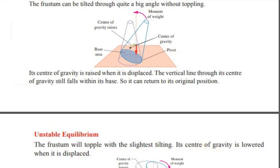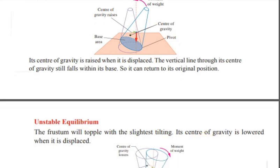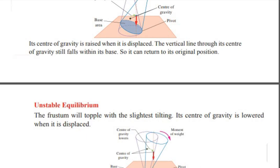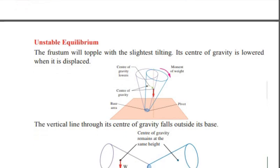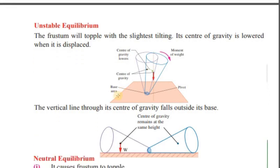In unstable equilibrium, the system will topple with the slightest push. The center of gravity is lowered when it is displaced, and the vertical line through its center of gravity falls outside its base.